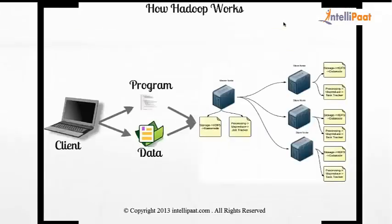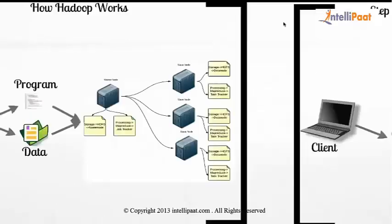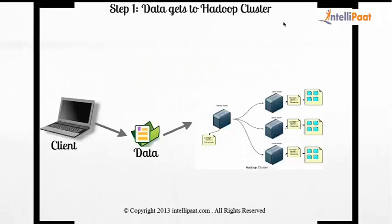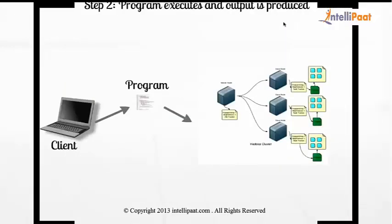From a client, you provide both data and a program. In step one, you pass all your data to Hadoop — it goes to the Name Node and eventually gets distributed to all the Data Nodes. Then you give your program to the Job Tracker, the component handling processing. The Job Tracker then schedules the program on all the data residing on local nodes and returns the output.